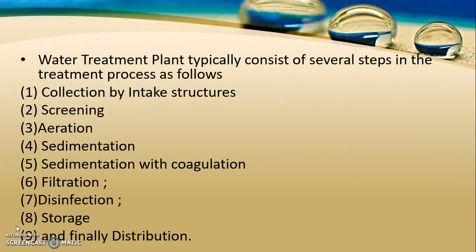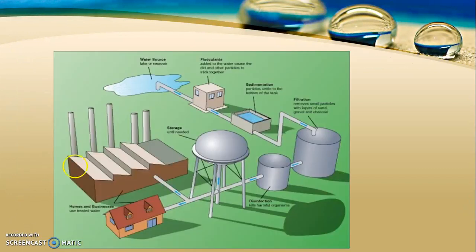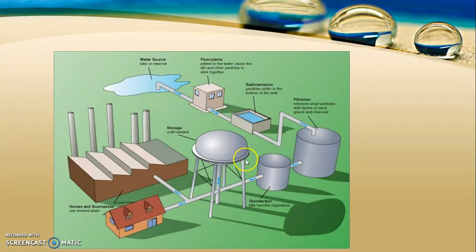The unit processes are: first, collection by intake structures; second, screening; third, aeration; fourth, sedimentation; fifth, sedimentation with coagulation; sixth, filtration; seventh, disinfection; eighth, storage; and finally, distribution. This is a simple layout showing the Water Treatment Plant and its distribution. First, the water is collected from natural water sources, then stored in an elevated service reservoir from where it is distributed to homes and industries.